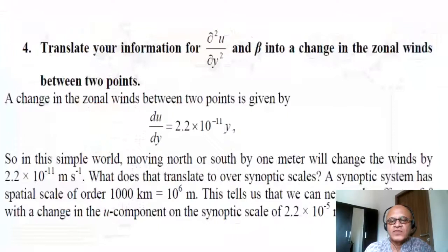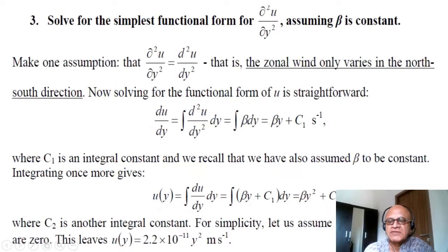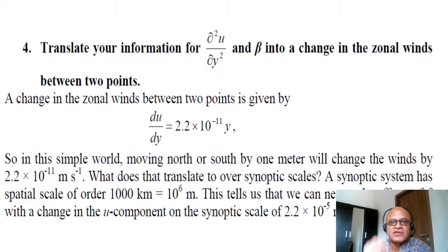What is the answer to our puzzle of the zonal component needed to negate or compensate for the beta effect? We had come up with a very small number. Obviously, the problem was ignoring C1 and C2 in these equations. We have to use observed wind speeds to find C1 and C2 to match the magnitudes, and then we will get a realistic solution for d²u/dy² needed to compensate for the beta effect.